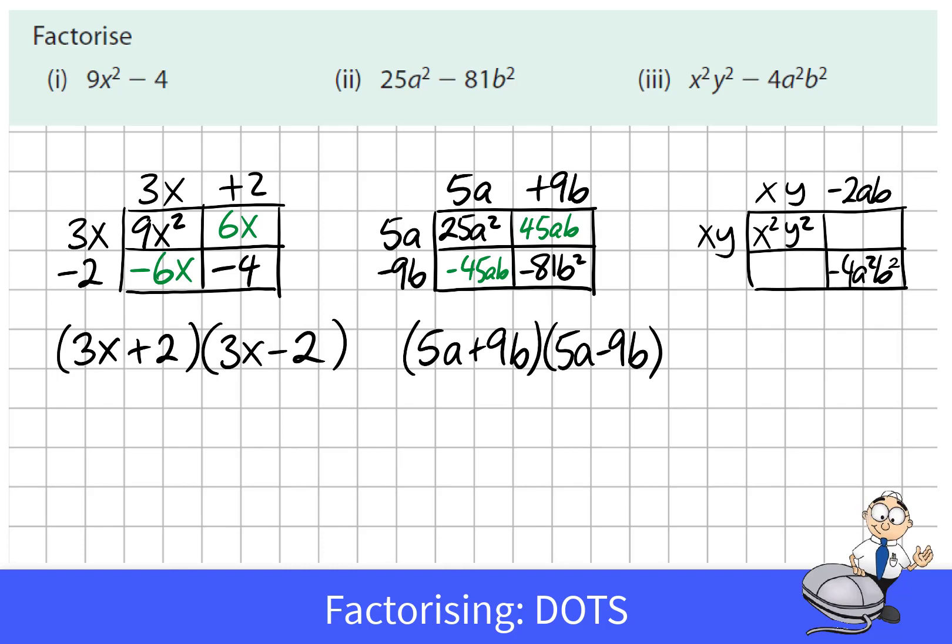And negative 2ab multiplied by positive 2ab would give us negative 4a squared b squared. Again I'm not going to bother to multiply out the other diagonals that would add up to 0. But we write our solution in brackets that xy plus 2ab and xy minus 2ab are factors.